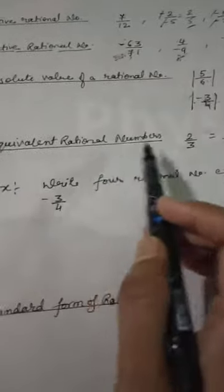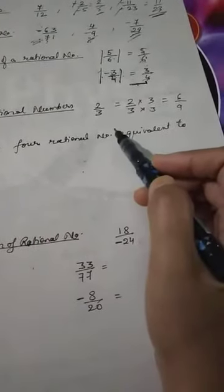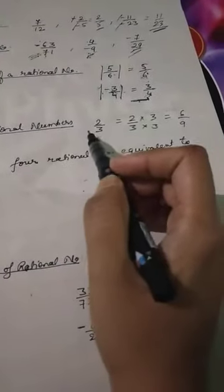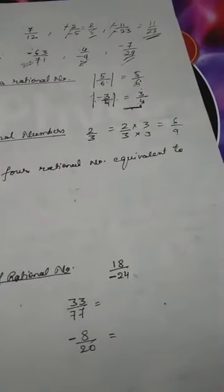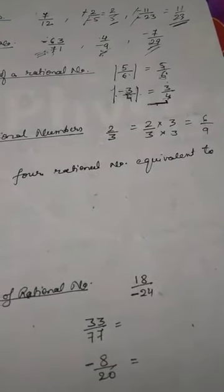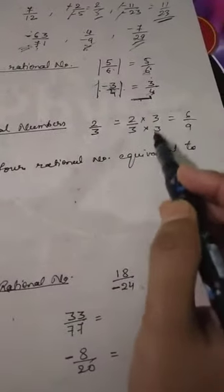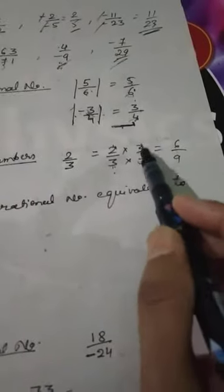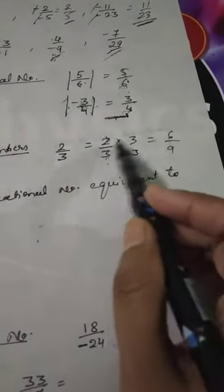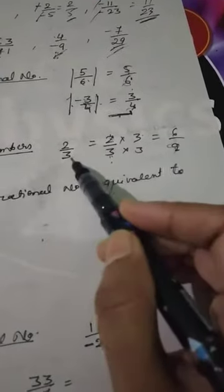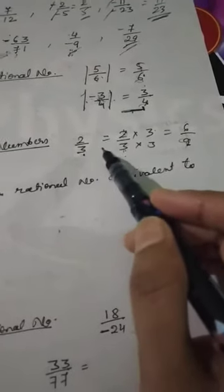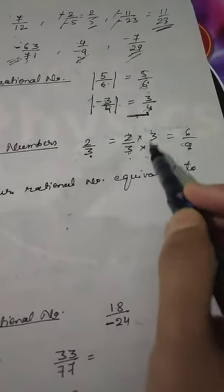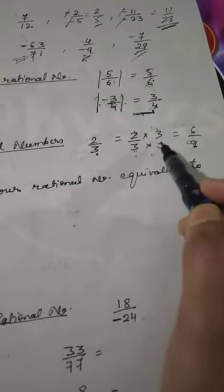Now equivalent rational numbers. Rational numbers remain the same if we multiply the numerator and denominator by the same non-zero integer. For example, multiplying 2/3 by 3/3 gives 6/9, which is the equivalent form of 2/3. To find an equivalent rational number, multiply numerator and denominator by the same integer.